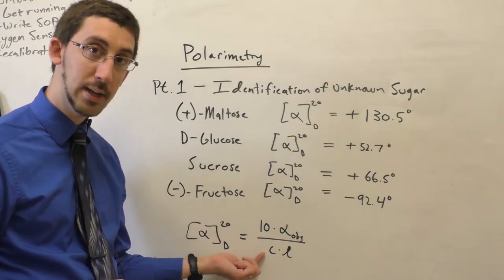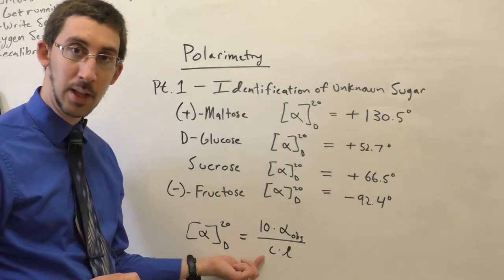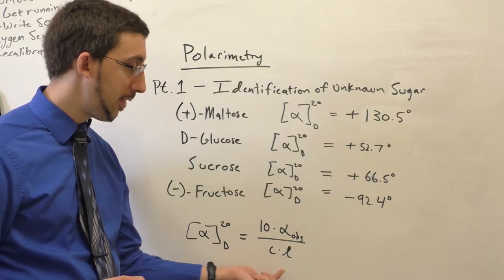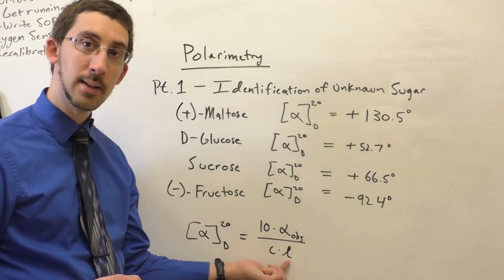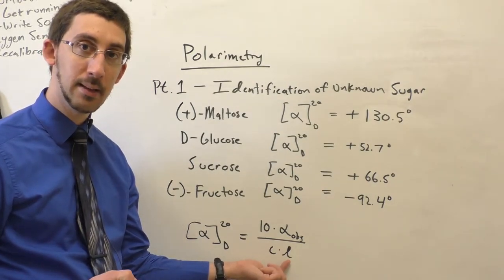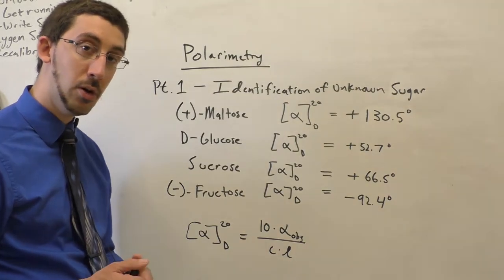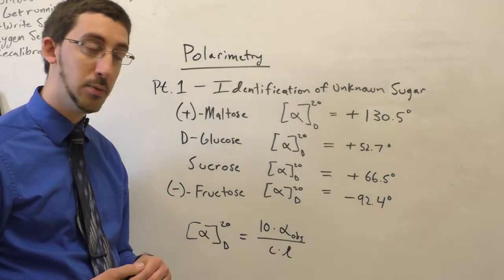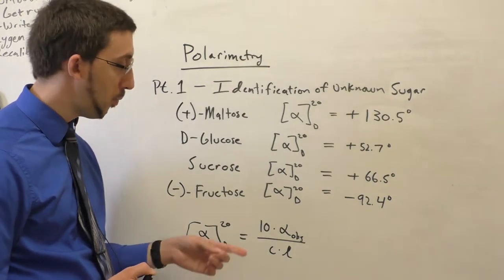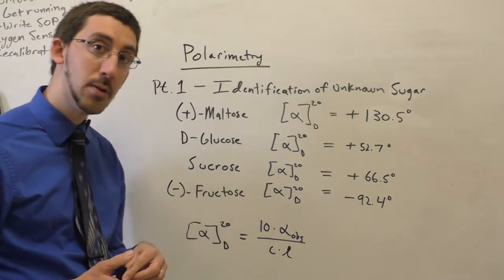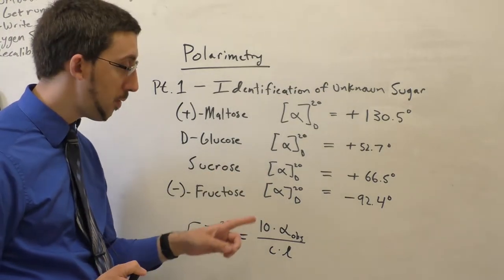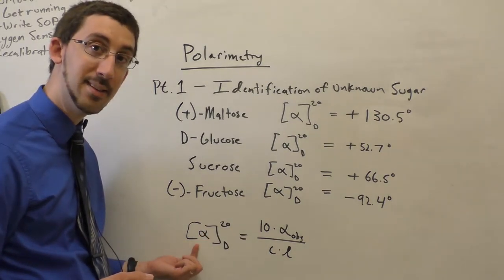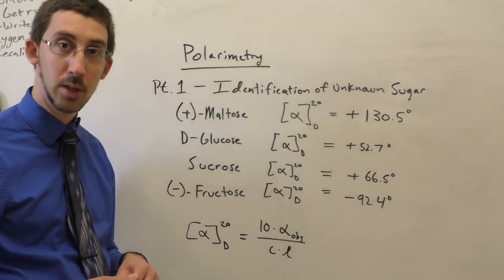And then in the denominator here, we have two factors. We have C and L. C is the concentration and that is given in grams per milliliter or grams per cubic centimeter. And then L is reported in centimeters. This is the path length of the polarimetry cell. And so if we use different concentrations, if we use different path lengths, we're going to come out with different observed rotation values. But if we plug all those numbers into this equation, we will always come out with a consistent specific rotation for that molecule.